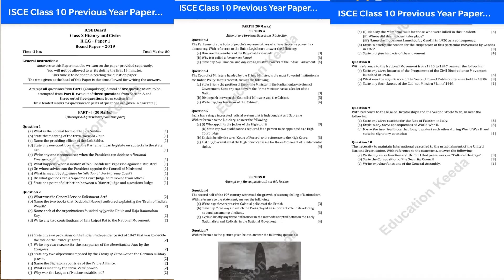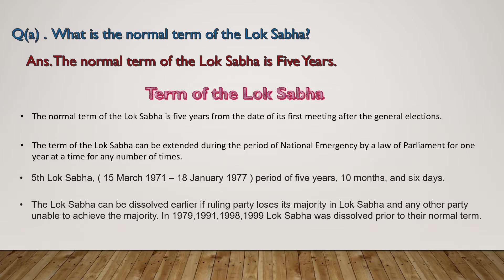First give a look on your question paper. Let us start from the first question: What is the normal term of the Lok Sabha? The answer is the normal term of the Lok Sabha is 5 years. But it is not compulsory that every time the term would be for 5 years. Sometimes Lok Sabha can be dissolved earlier and sometimes its term can be extended. So when it can be extended and when it can be dissolved earlier, we have to know. The normal term of the Lok Sabha is 5 years.